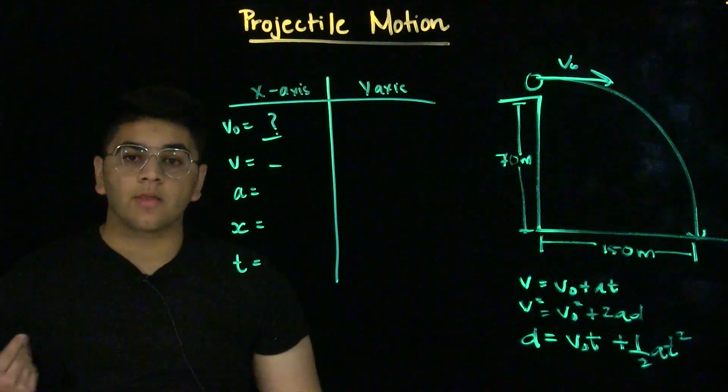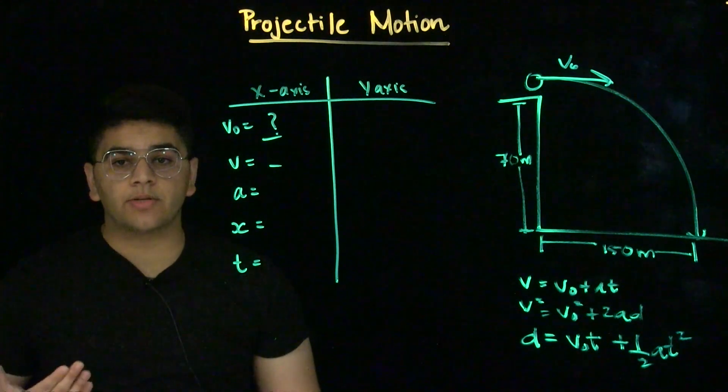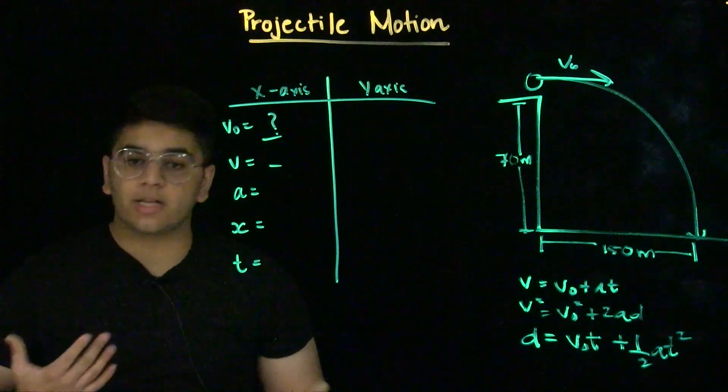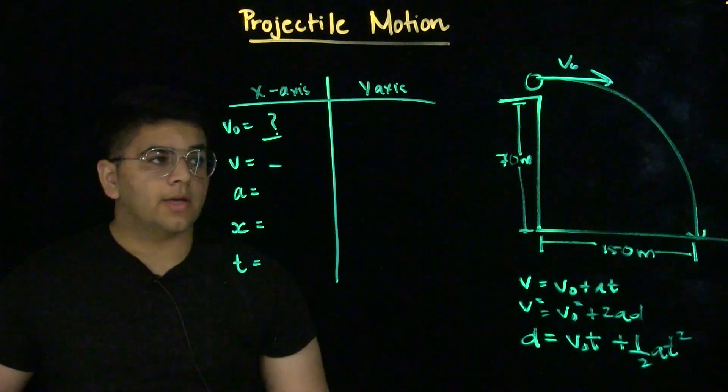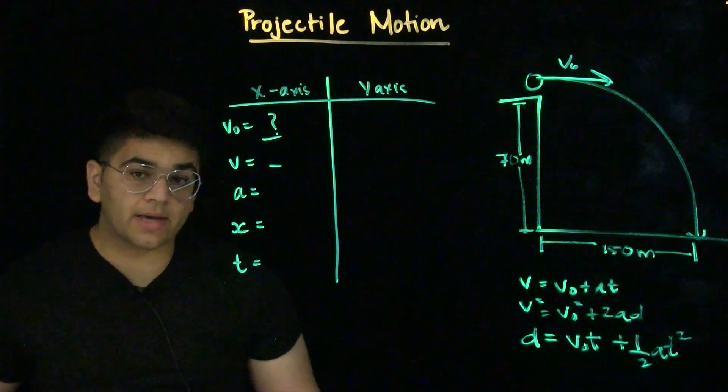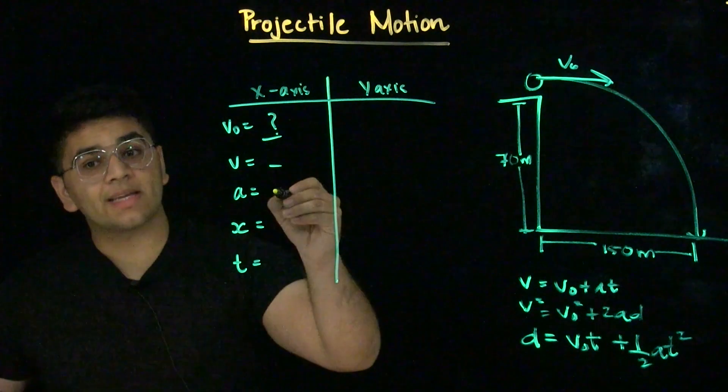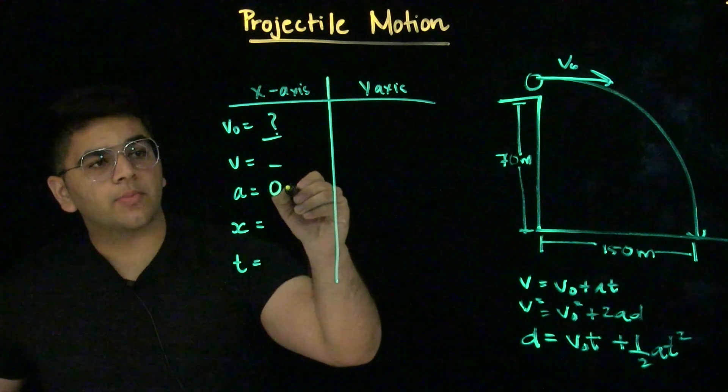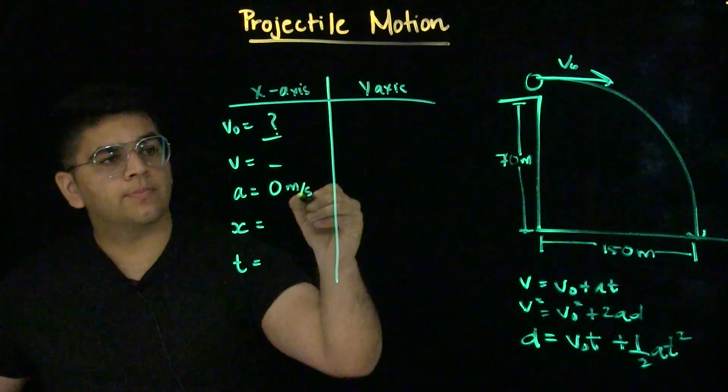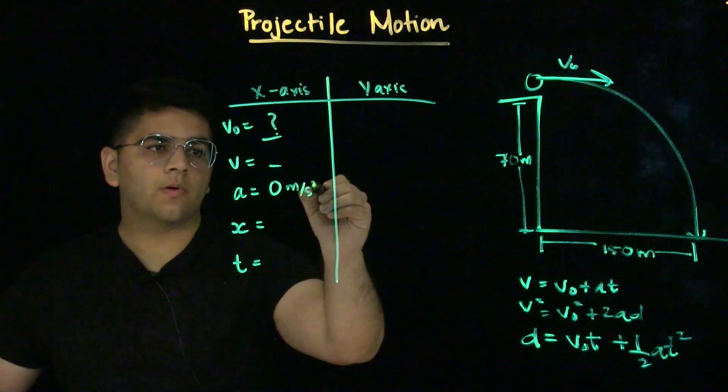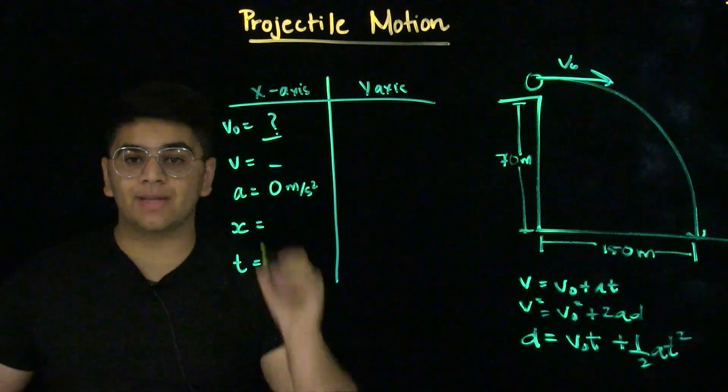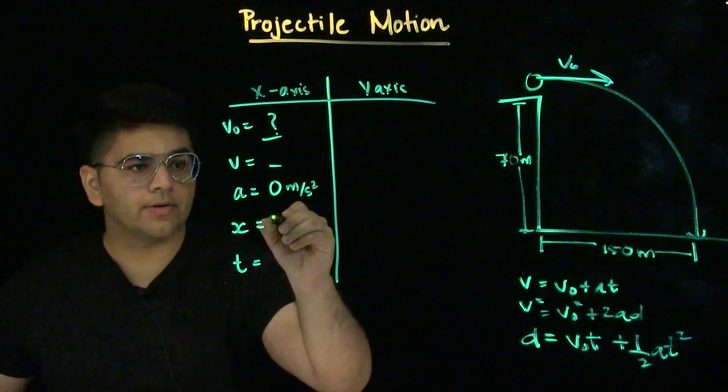In the x-axis, there is no air resistance in consideration. So, the rock will not speed up or slow down in any scenario. We consider the acceleration in the x-axis always as zero when we're considering projectile motion. We know the displacement in the x-axis is 150 meters.